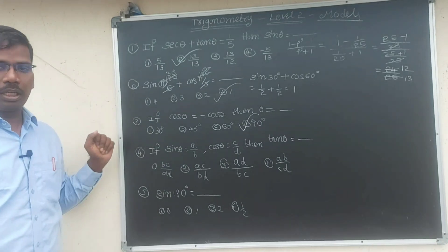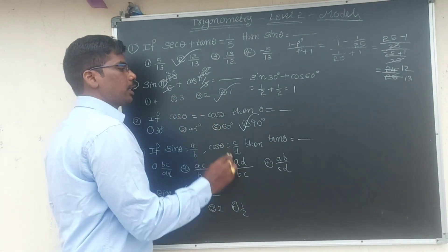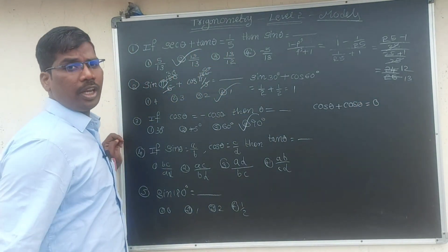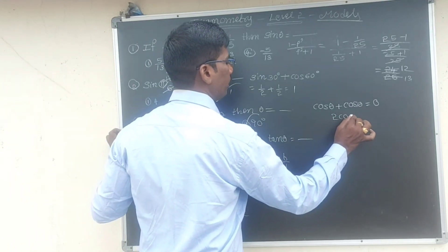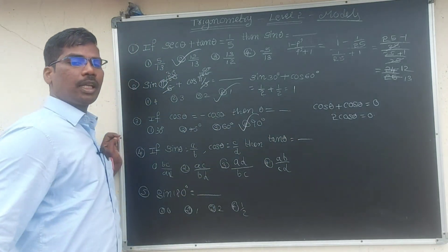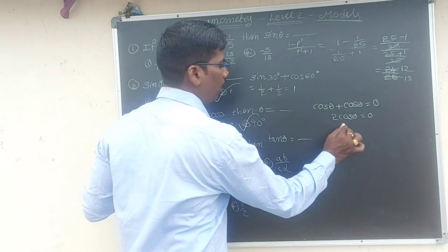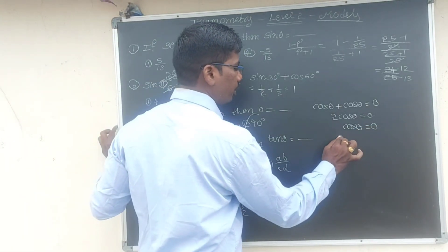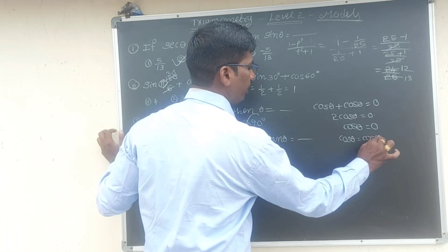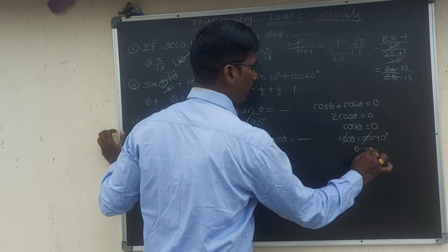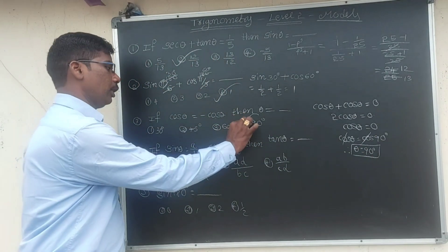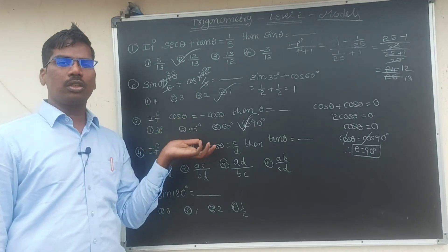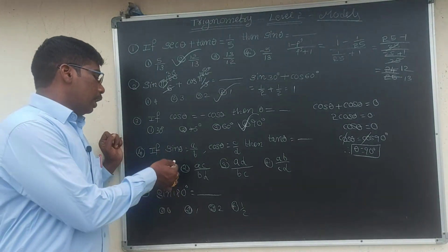Let's also look at the algebraic technique. cos θ minus cos θ equals 0. Any value, 2 cos θ equals 0. So 2 cos θ equals 0, which means cos θ equals 0, and cos θ equals 0 gives θ equals 90 degrees.